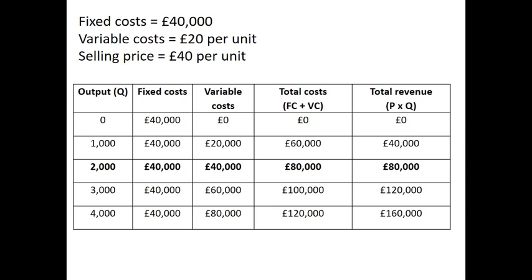This is the simple example from the previous video to construct a break-even chart. You can see that the break-even point is 2,000 units, where total revenue equals total cost. Just use these simple figures: fixed costs of £40,000 and a selling price of £40 per unit.